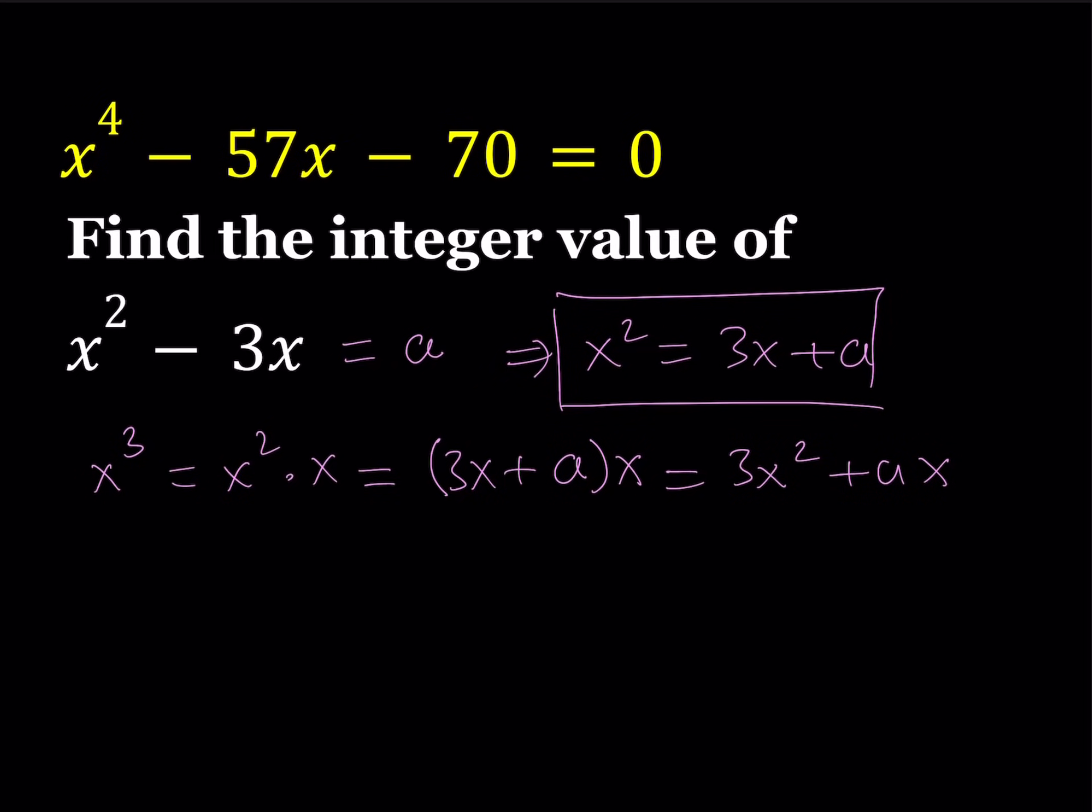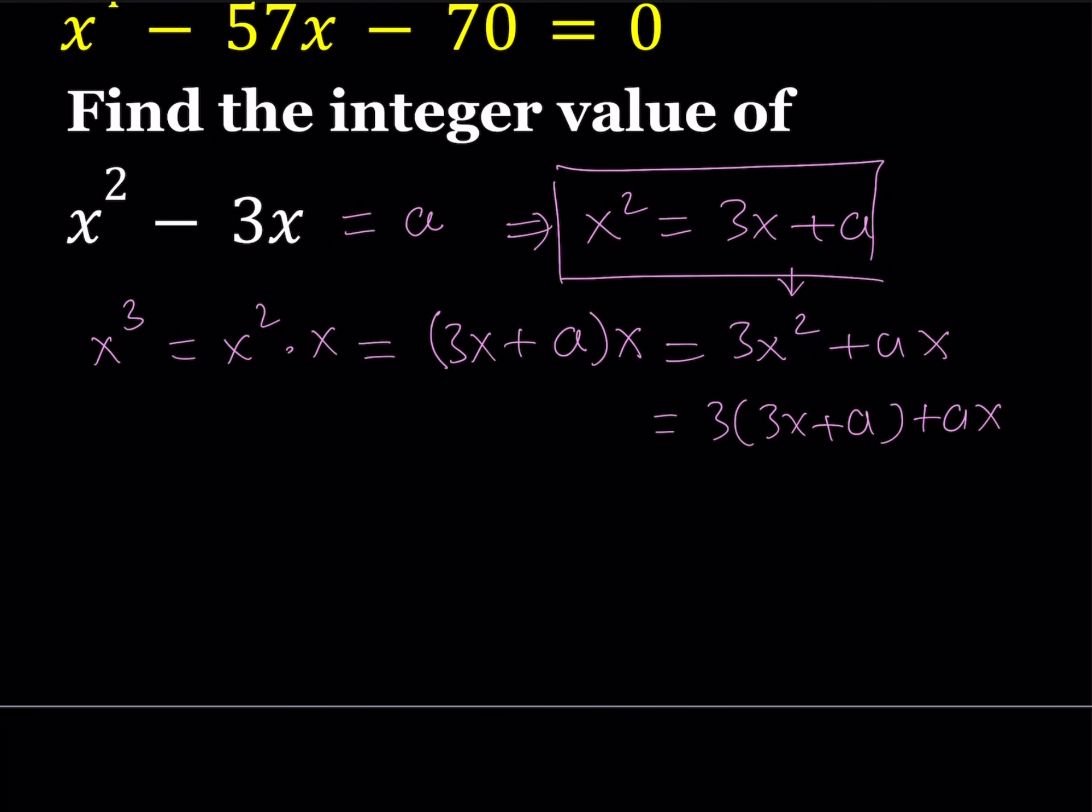And then now replace this x² with 3x + a from here. And you're going to get x³. This is x³, remember, in terms of x again. This is going to give you 9x. This is going to give you ax. So I can write it as (a + 9)x + 3a. And this is going to be my x³ value.